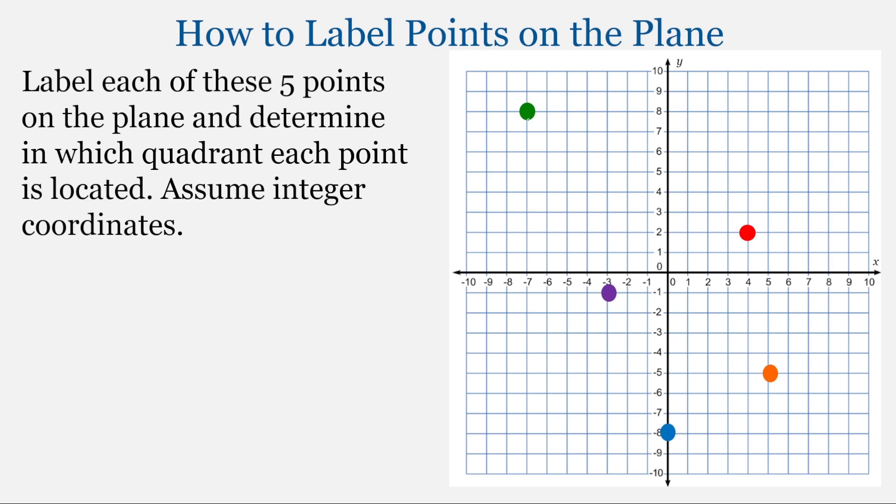We'll start with this green point in the upper left-hand corner. So we'll look down to the x-axis, and that has a value of negative 7. So the x-coordinate is negative 7. And the y-coordinate is 8. And this is quadrant 2.